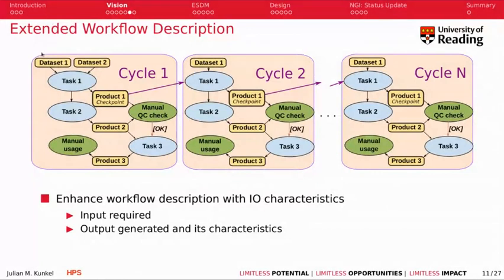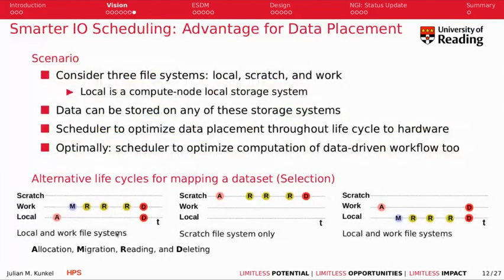Here's an example of an extended workflow definition: we still have the tasks, but instead of just saying this task depends on that task, we have the inputs annotated and information about how the outputs are produced. We also have the cyclic behavior here. For data placement, consider three file systems: a node-local file system like /tmp, a scratch shared file system, and a work shared file system with different characteristics. For a single dataset, you have to decide where to place it — generate on the local file system, do something with it, migrate to the work file system where it's read multiple times, and then delete both instances. For redundancy you might keep a replica on scratch.